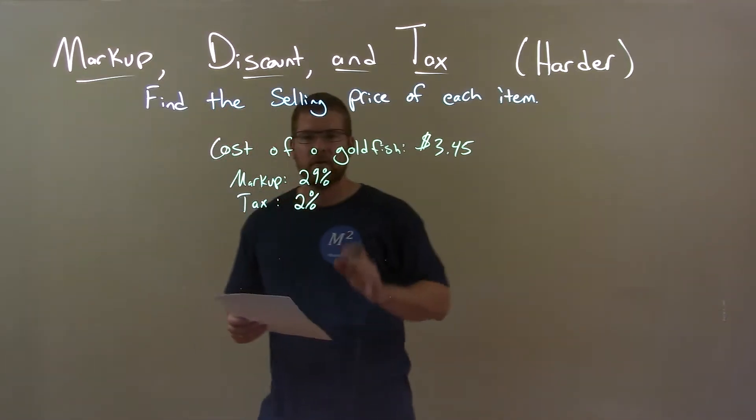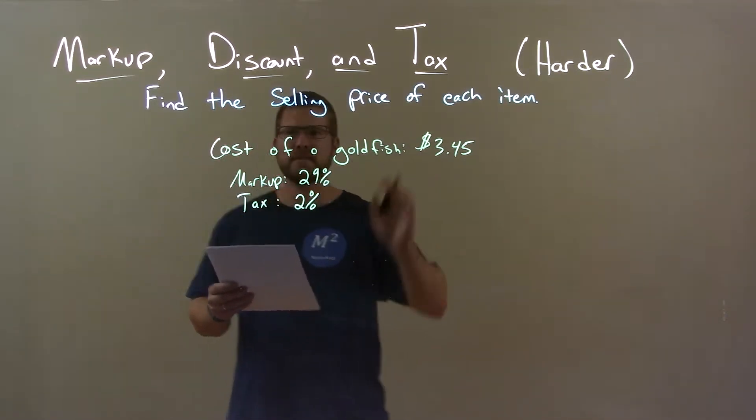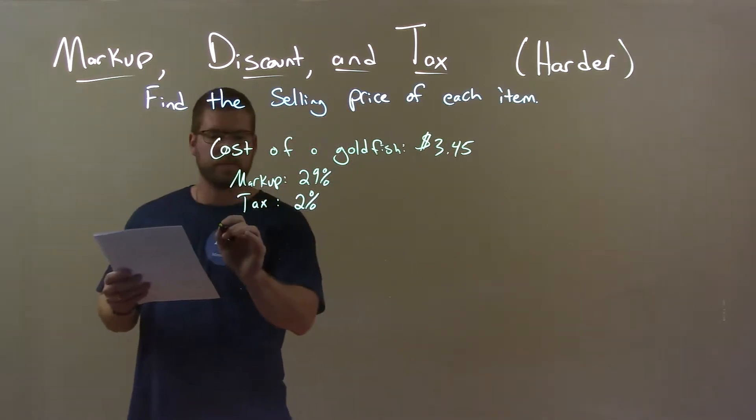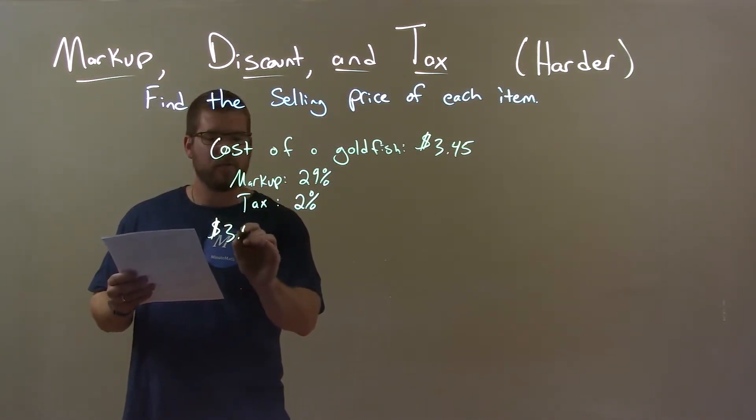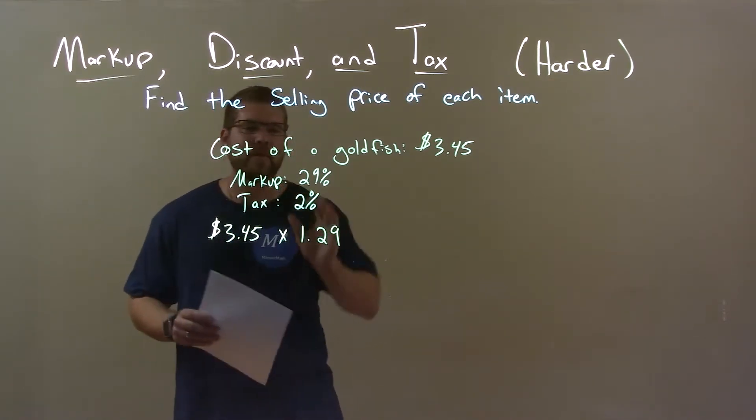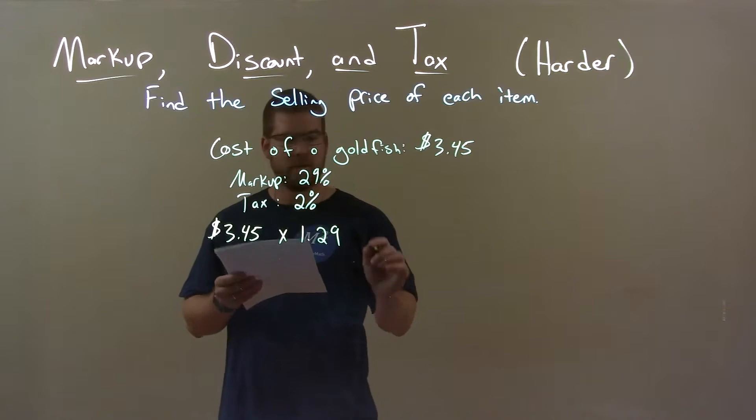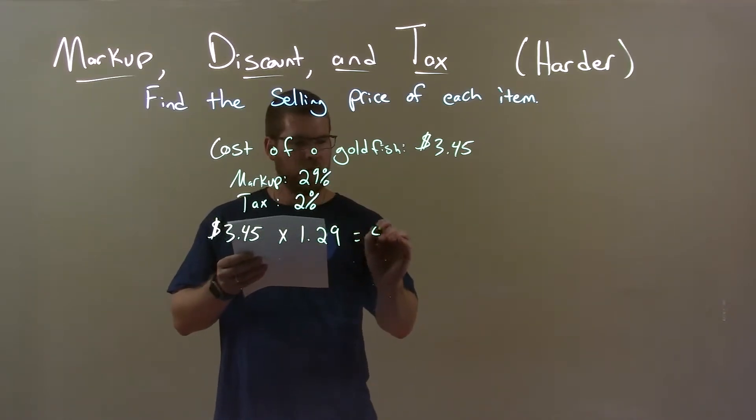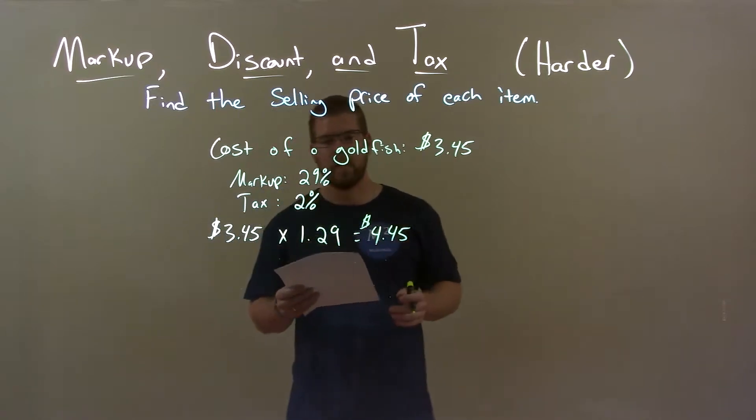Well, what I want to do now - I first start with the cost of the goldfish, $3.45, and I multiply that by 1.29, which represents a 29% markup. This gives us $4.45 as our answer there, the cost after the markup.